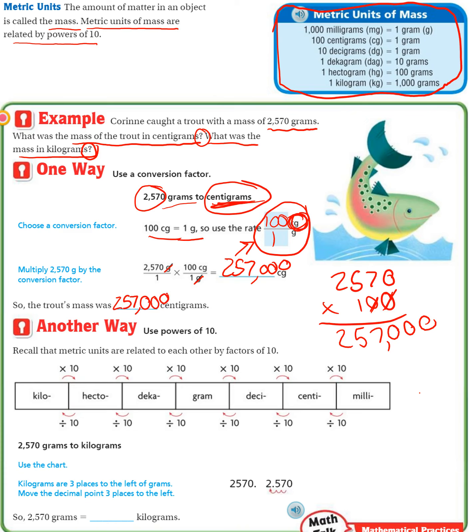Now, another way is to use this chart, which is my favorite way of doing it. Recall that metric units are related to each other by factors of 10. As you go this way, you're multiplying by 10. As you go this way, you're dividing by 10.